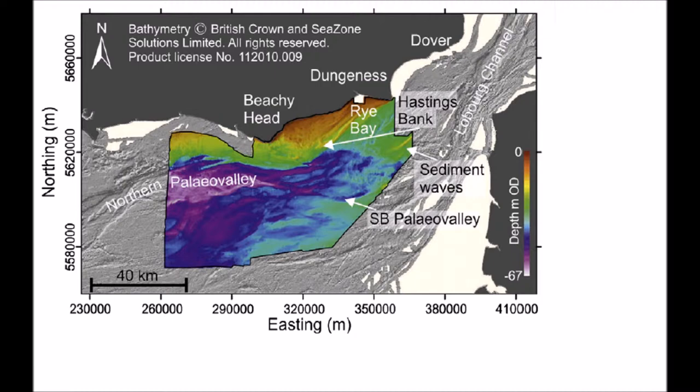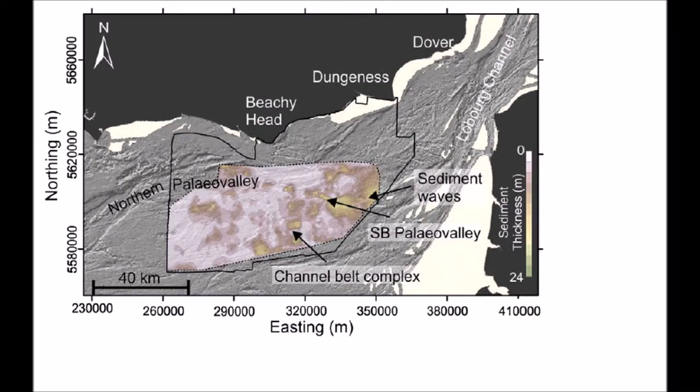This is a picture of seabed bathymetry of the eastern English Channel study area from a paper on the inundation of the continental shelf between Britain and France at the glacial interglacial. You see a paleo valley, and inside below that there's a channel belt complex and sediment waves. You can get a big scale of what unconsolidated sediment looks like.